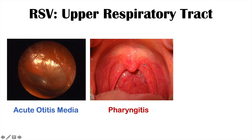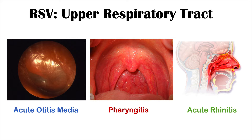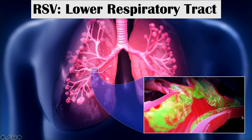RSV can also cause pharyngitis — a sore throat. When we look in someone's throat, we can see that it is red and erythematous. RSV can also cause acute rhinitis, which is a runny nose. So the upper respiratory tract infections are: acute otitis media, pharyngitis, and acute rhinitis.